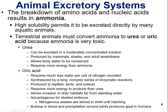Because ammonia has high solubility, it can be excreted directly by many aquatic animals. However, terrestrial animals have to convert that ammonia to urea or uric acid — because it's very toxic — and then excrete those molecules out.